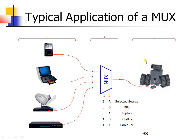Now let us see an application of the 4-to-1 line multiplexer. Here we have a speaker set receiving input from 4 sources, but the speaker can respond to only one source at a time. That is why a multiplexer with 2 selection lines is used. Based on these selection lines, one of the sources is selected and its output is given as input to the speaker set.